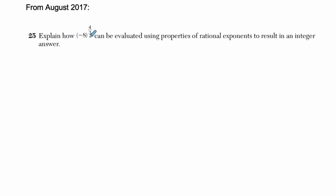Alright, so this says explain how negative 8 to the 4 thirds can be evaluated using properties of rational exponents to result in an integer answer. Integers are positive or negative whole numbers. Rational exponents are exponents that are rational numbers, which we have right here.